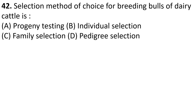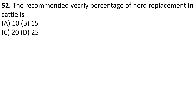Selection method of choice for breeding bulls of dairy cattle is Option A: Progeny testing. And the recommended yearly percentage of herd replacement in cattle is Option C: 20%.